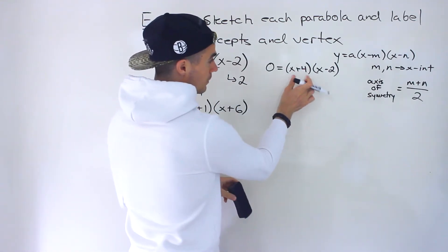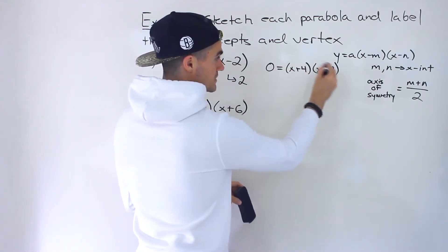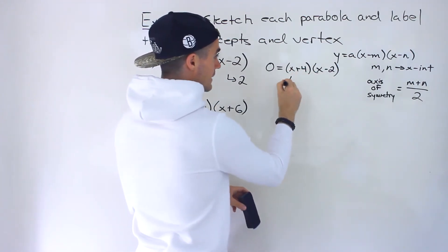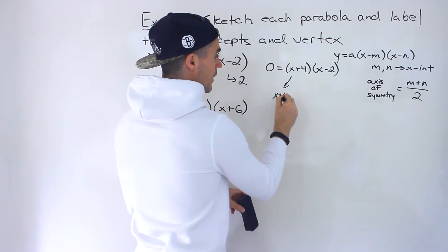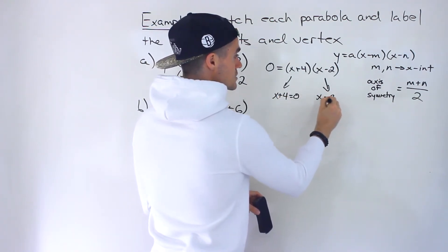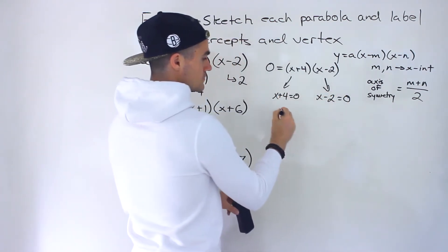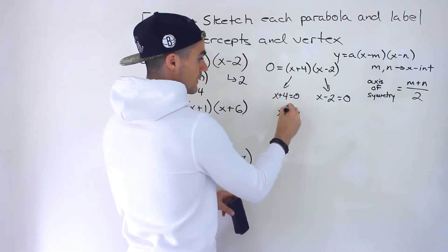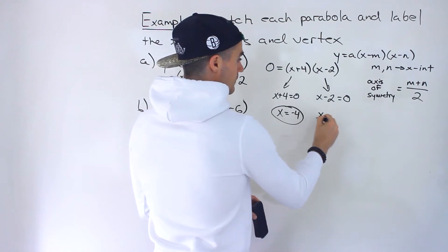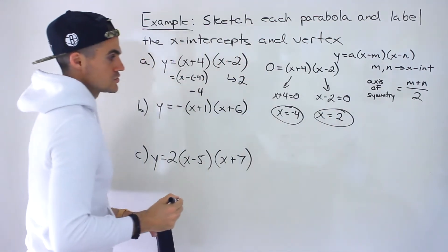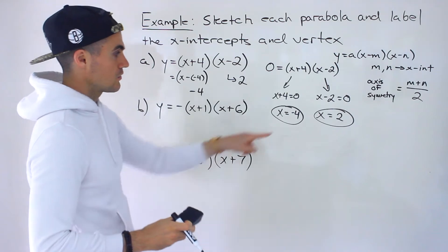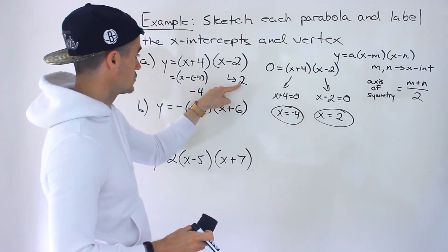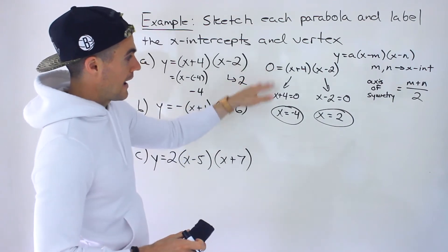In case your teacher wants you to show algebraically how we get these values: for an x-intercept, the y-value is always 0, so how can we make the whole thing 0? One of these brackets can equal 0 — either x plus 4 equals 0, or x minus 2 equals 0. This gives x equals negative 4 or x equals 2. So that's how we get the x-intercepts algebraically.